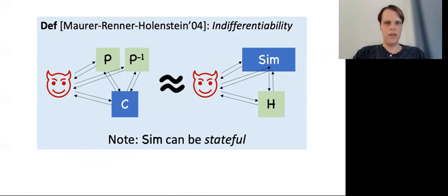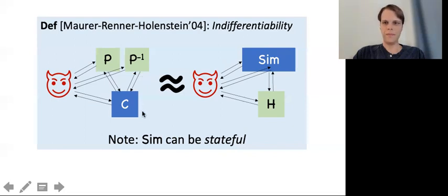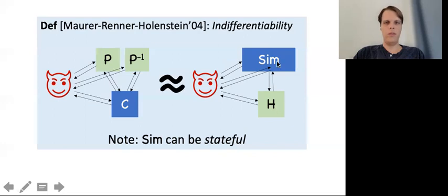Indifferentiability is defined by the picture here. The adversary is given two interfaces. One corresponds to the building block — in our case an ideal permutation and its inverse. The second corresponds to the desired object we are trying to construct, in our case a hash function. Indifferentiability then defines two worlds, real and ideal. In the real world, the building block oracle is the ideal cipher and the hash function is set to be the construction, which makes queries to the building block. In the ideal world, the hash function is a truly random oracle, and queries to the cipher are answered via a simulator, which can make queries to the random oracle in order to help answer those queries.